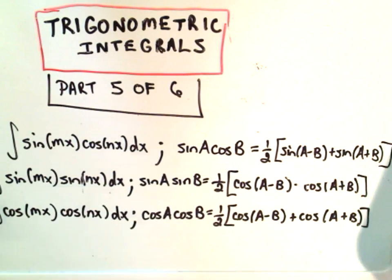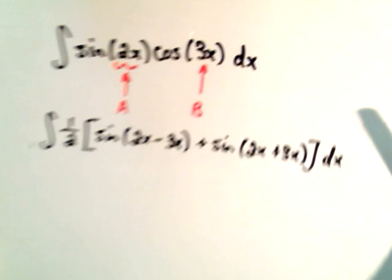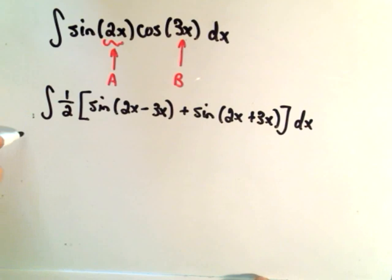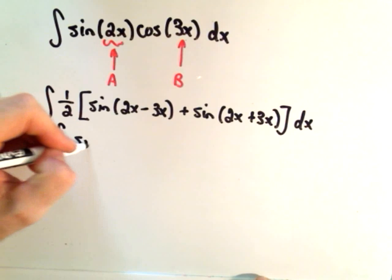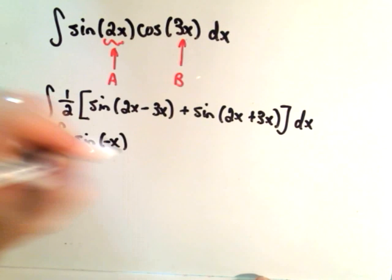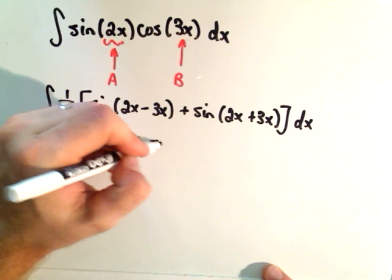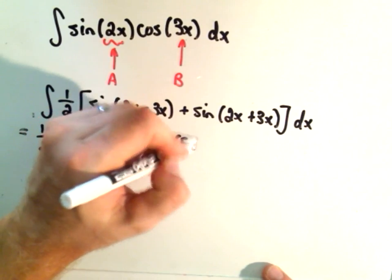So again, we're using this first formula right here. And all you really do is simplify it down, so you'll get one half, we'll get sine of negative x, plus sine of 5x,